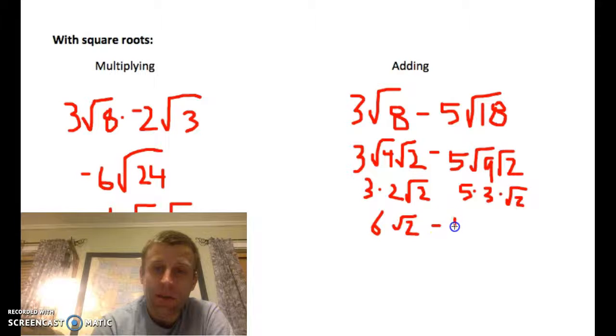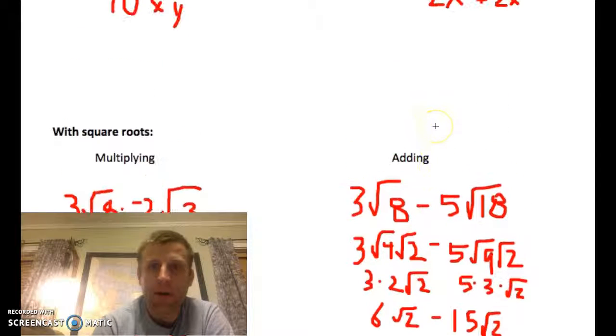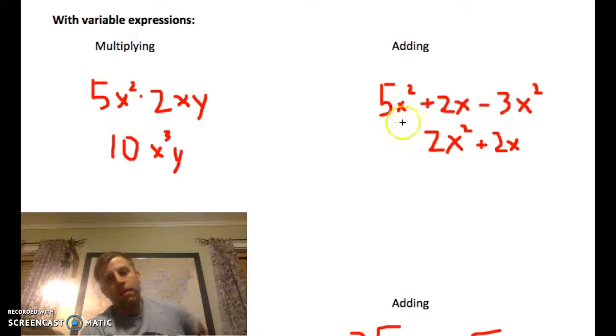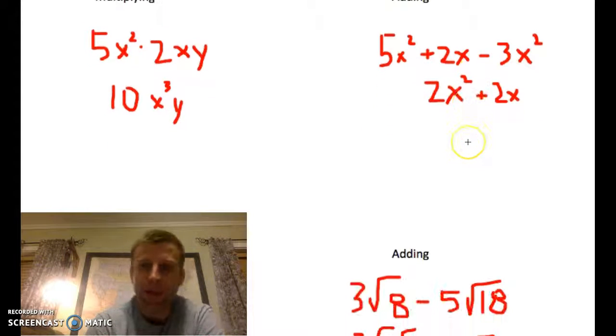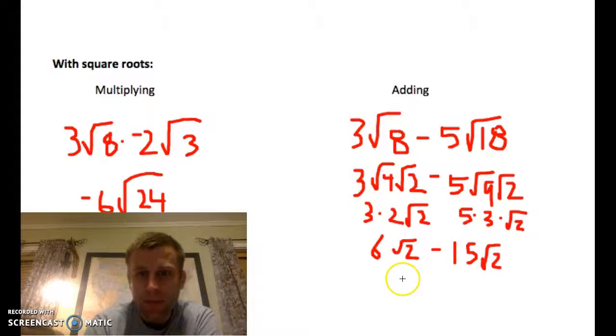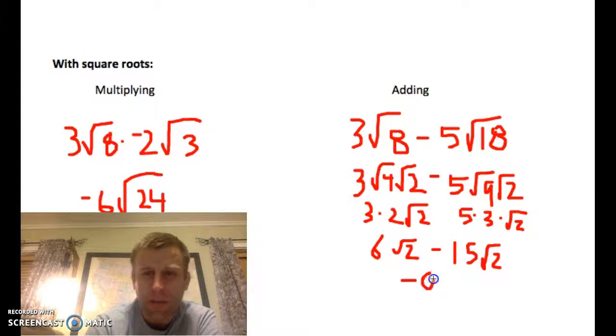So, now you can see they're like, they have the same radical, so they're kind of like up here when these both had the same variable, x squared on them. It's kind of similar. These both have a square root of two, so we can combine them. And get, well, six minus fifteen is negative nine square root of two. So, hopefully you see how that is similar to these ones up above there.